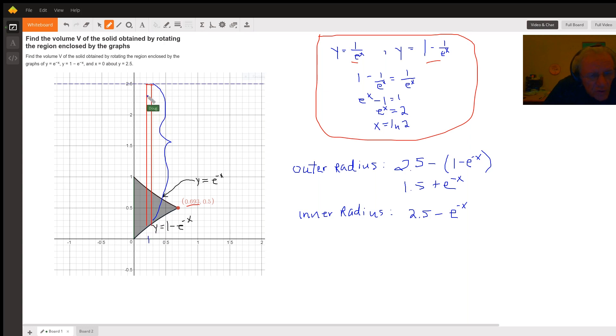That distance is the y value of this function right here. So that's why we say the outer radius is 2.5, the top minus the bottom y value. And that simplifies to 1.5 plus e to the minus x.